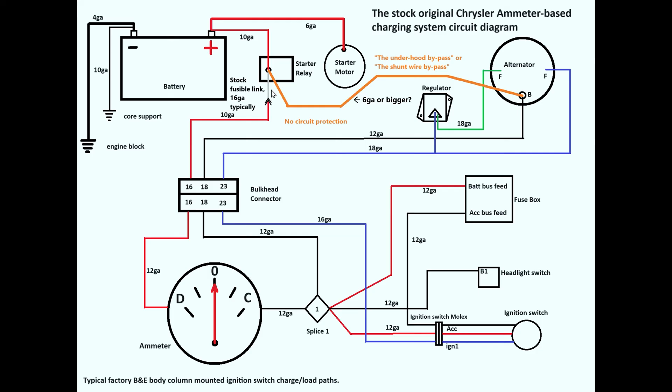They use fusible links here because they tend to react slower than any other circuit protection devices. A fuse would pop instantaneously on any given spike, whatever the fuse is rated for. A circuit breaker would also trip. A fusible link typically can absorb some of those spikes in current without actually opening up. But in the event of a short, you want that to open up or you'll be lighting up wires.